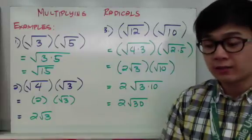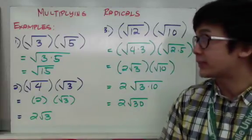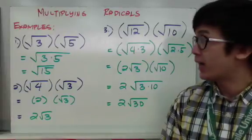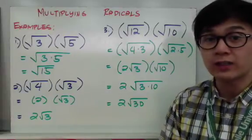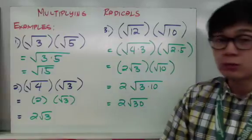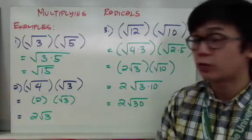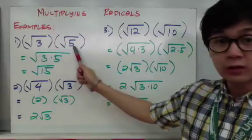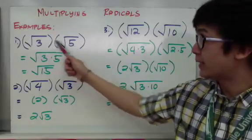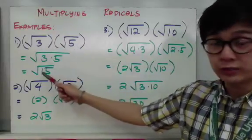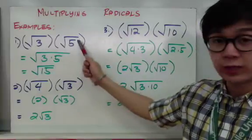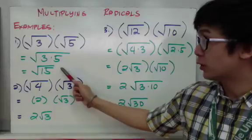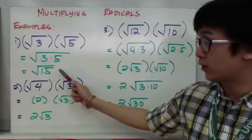When multiplying radicals, the process is simple — multiply the radicands and simplify if needed. For example 1, square root of 3 times square root of 5: multiply the radicands to get square root of 15. Since 15 is not further factorable, square root of 15 is your final answer.